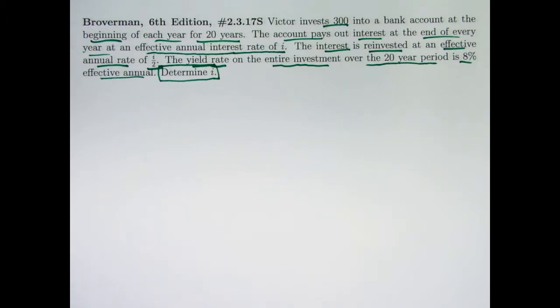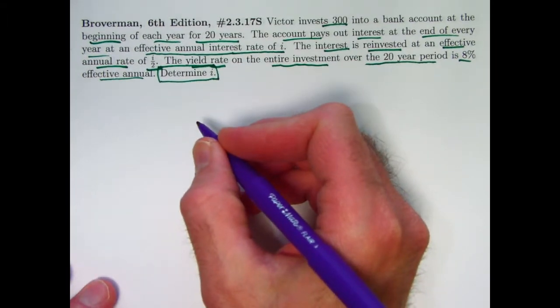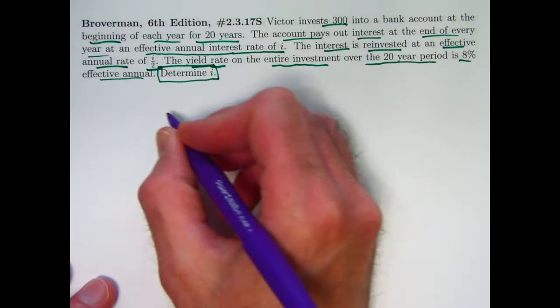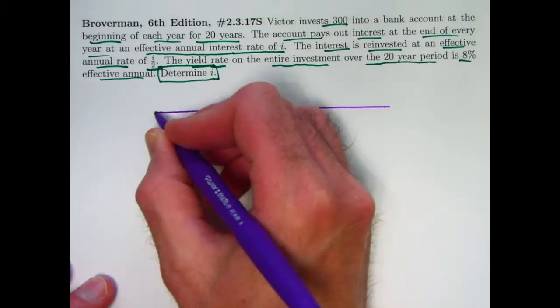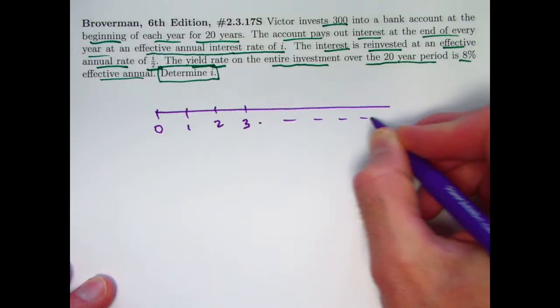Oftentimes when you determine I, especially in the context of annuities, you have to use built-in financial functions or guessing and testing. So using the built-in financial functions is a good idea. So this is the timeline. Time is going to be in years.